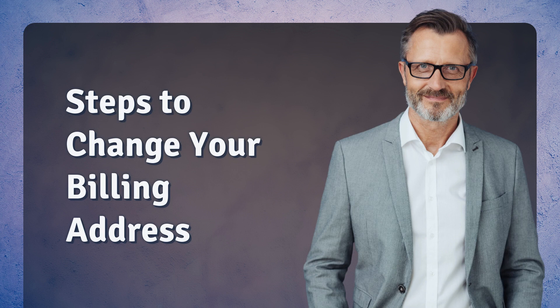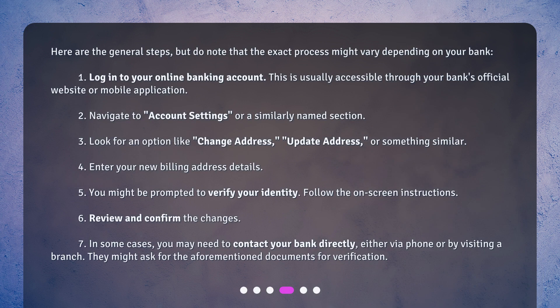Here are the general steps, but do note that the exact process might vary depending on your bank. 1. Log in to your online banking account — usually accessible through your bank's official website or mobile application. 2. Navigate to 'Account Settings' or a similarly named section. 3. Look for an option like 'Change Address' or 'Update Address'. 4. Enter your new billing address details. 5. You might be prompted to verify your identity — follow the on-screen instructions. 6. Review and confirm the changes. 7. In some cases, you may need to contact your bank directly, either via phone or by visiting a branch. 8. They might ask for the aforementioned documents for verification.